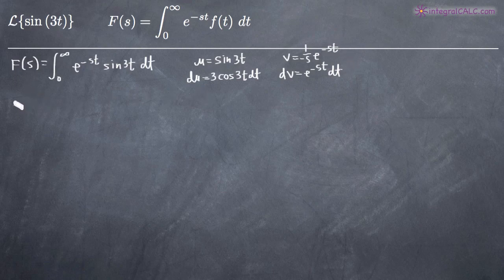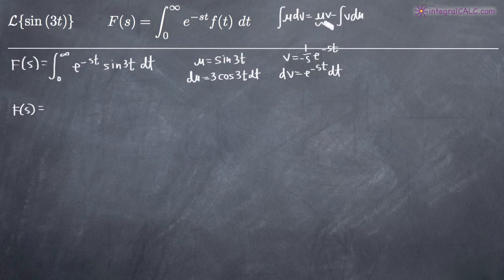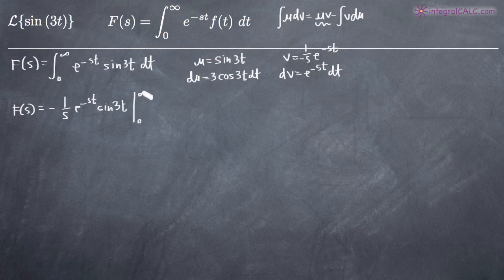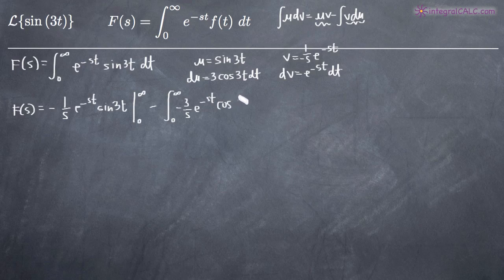Now we'll plug into the integration by parts formula: the integral of u dv equals u times v minus the integral of v du. So u times v gives us negative 1 over s times e to the negative st times sine of 3t, and we have to evaluate this on the range 0 to infinity. Then we subtract the integral from 0 to infinity of v du, which gives us negative 3 over s times e to the negative st times cosine of 3t dt.